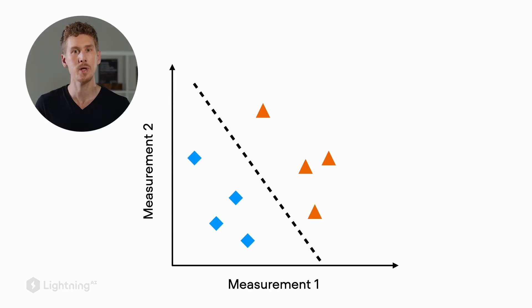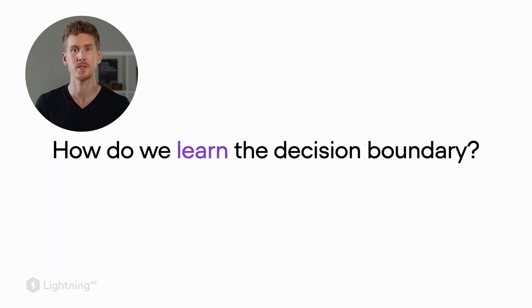So revisiting this example of our two-dimensional dataset here, we have two measurement variables or feature variables, and we have a binary classification task where we have two classes, the blue diamonds and the orange triangles. So now the big question is, how does the machine learning algorithm learn this decision boundary?